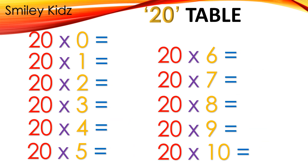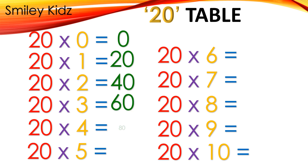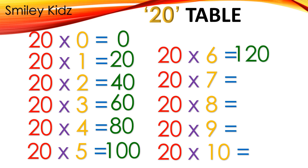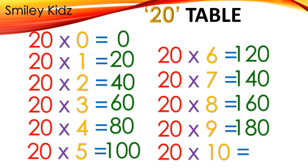Table 20: 20×0=0, 20×1=20, 20×2=40, 20×3=60, 20×4=80, 20×5=100, 20×6=120, 20×7=140, 20×8=160, 20×9=180, 20×10=200.